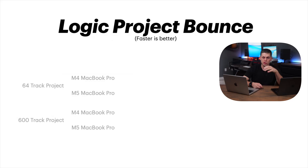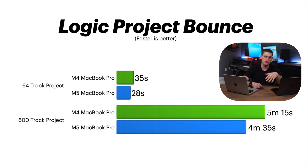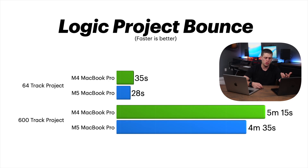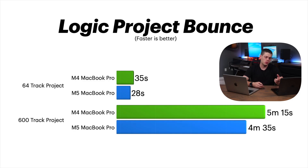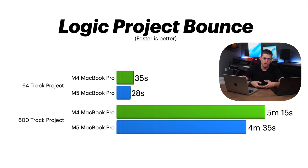The next Logic tests were the bounce tests. I loaded 600 of those same channels and did an offline bounce to see how fast it could finish. On the M4 it took five minutes and 15 seconds; on the M5 it took four minutes and 35 seconds — a nice performance boost. Running a more realistic 64-track bounce, it took 35 seconds on the M4 and 28 seconds on the M5. If you're using fewer tracks you won't feel the difference as much, so you really just get a little bit of buffer with musical apps on the M5.